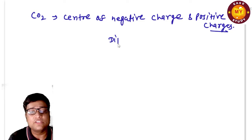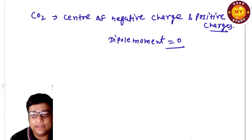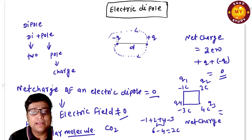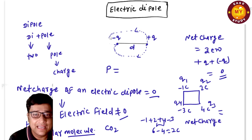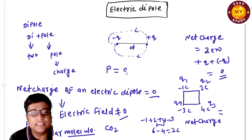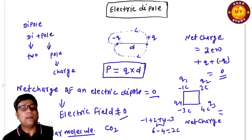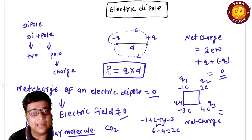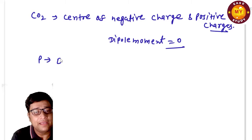When the center of negative charges and positive charges coincide, the dipole moment is zero. But when a charge −q and +q are separated by a small distance d, there is a dipole moment due to the electric field present. The dipole moment is denoted by p, and it equals q × d. The charges are equal in magnitude, only the sign is different.